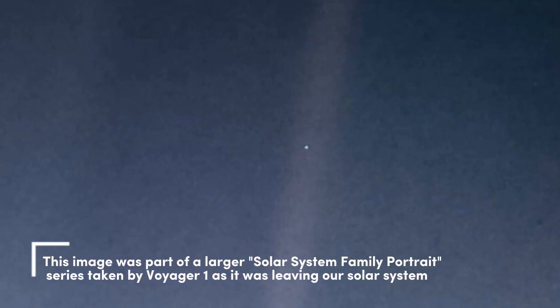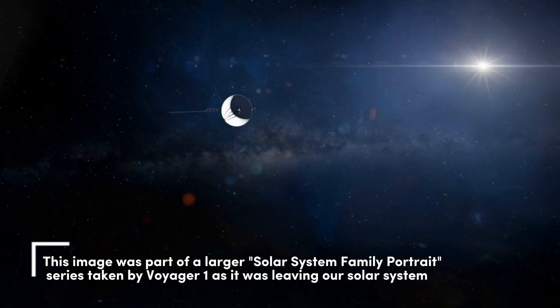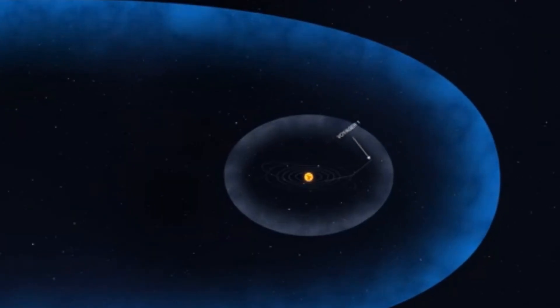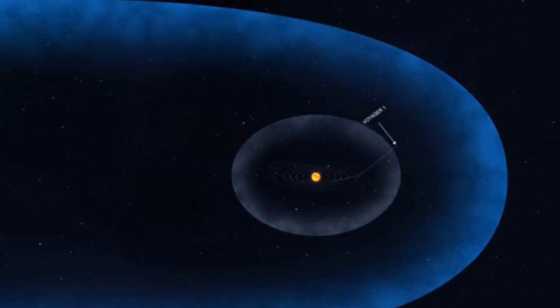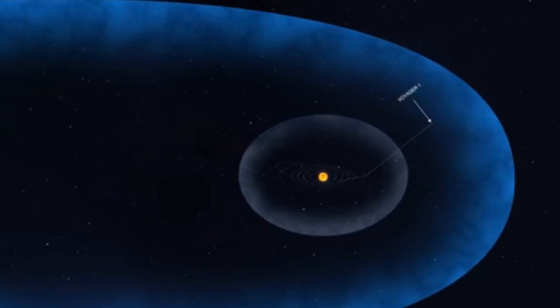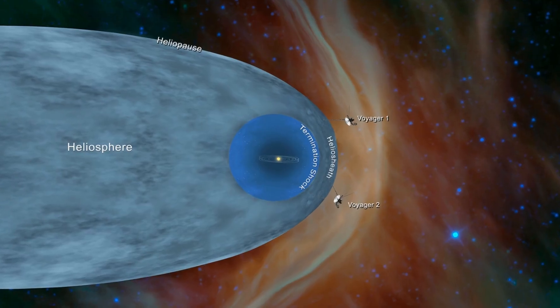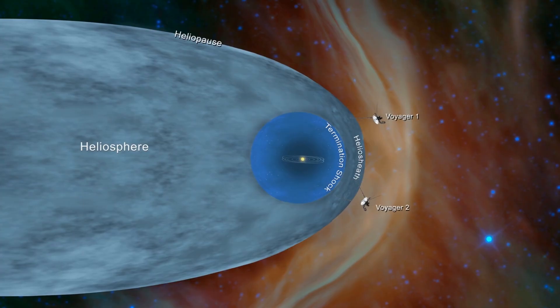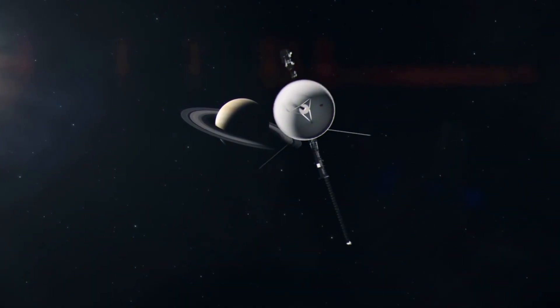Before turning its cameras off forever, it captured one last image, Earth, a pale blue dot, floating in a sunbeam, a final glance at its birthplace. In 1998, Voyager 1 passed Pioneer 10 to become the most distant human-made object, and in August 2012, it made history again, crossing the heliopause and entering interstellar space.